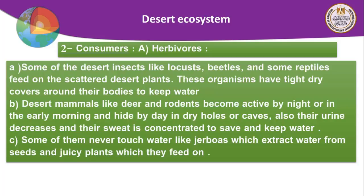Desert animals also reduce urine output and concentrate their sweat to save water. Some animals like the jerboa never drink water directly — they extract water from seeds and juicy plants which they feed on, using these as a substitute for water.